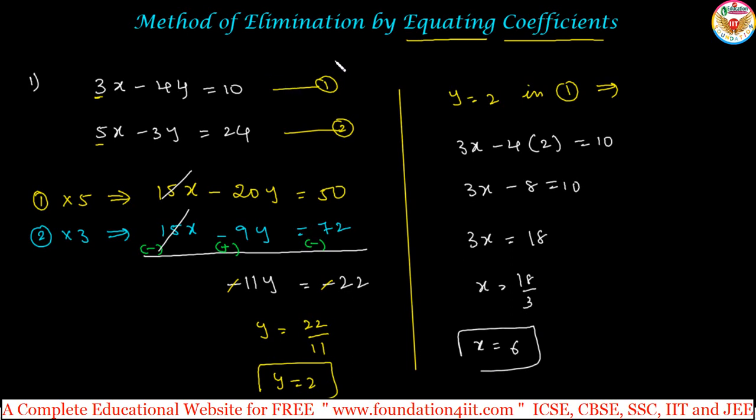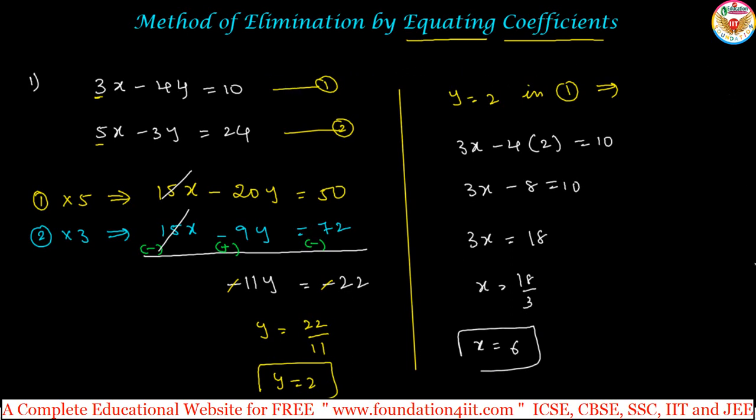x is 6 and y is equals to 2. So this is the method of elimination by equating coefficients. Let us take one more example. And here is another example. Let me take two equations. Solve using the method of elimination by equating the coefficients. The equation is x plus y is equals to 3.3, and one more equation: 0.6 divided by 3x minus 2y is equals to minus 1.